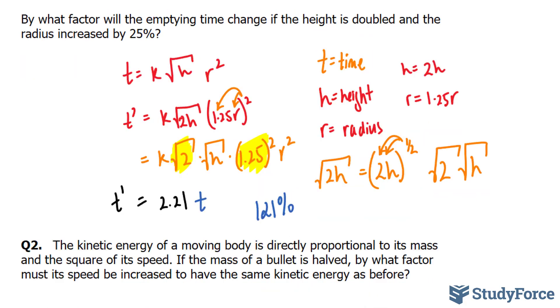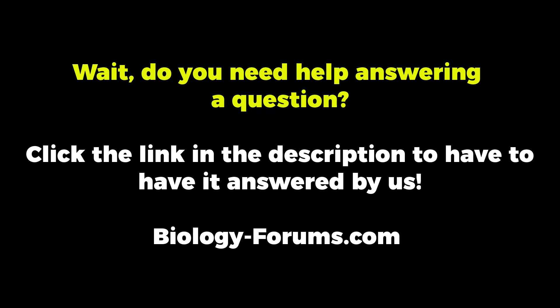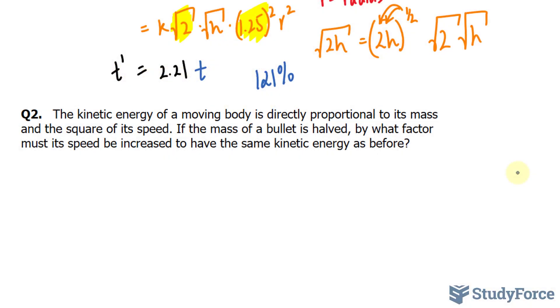Let's move on to question two. The kinetic energy of a moving body is directly proportional to its mass and the square of its speed. So I'm going to represent KE as kinetic energy. Also, M will be mass and S will be speed. I've defined all my variables.